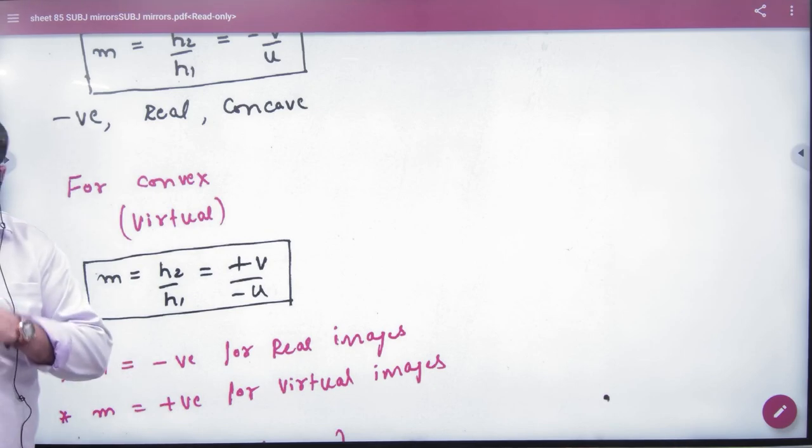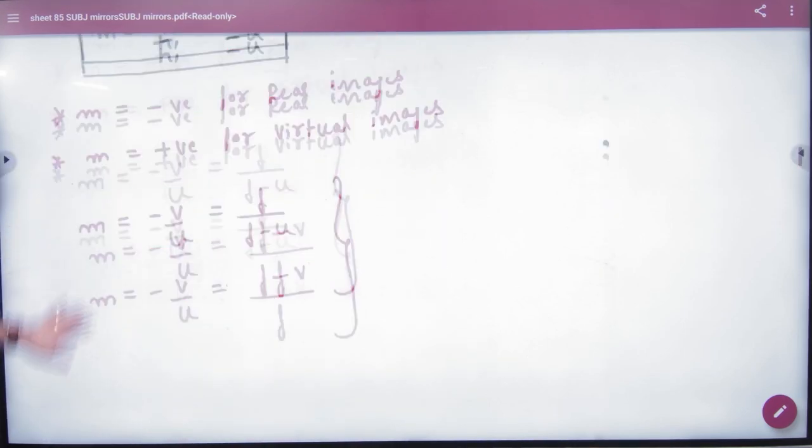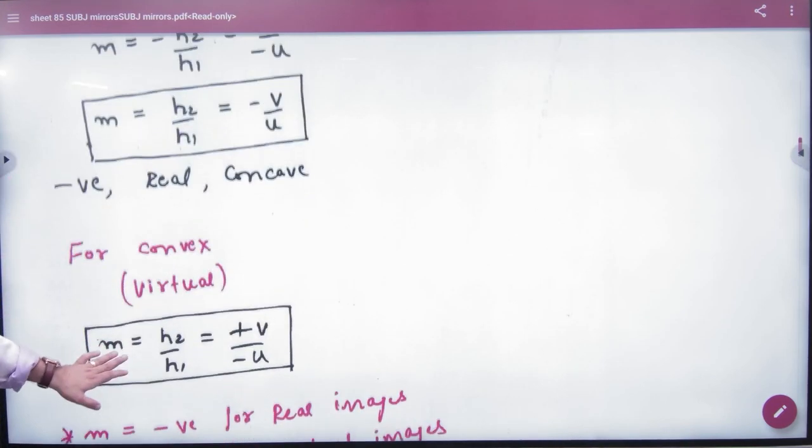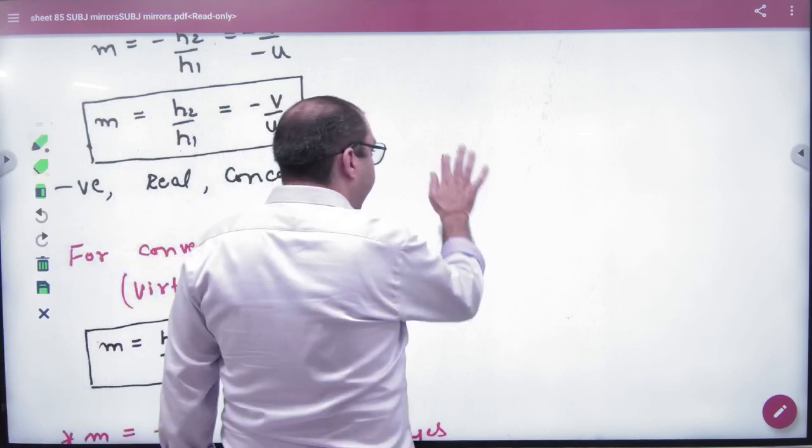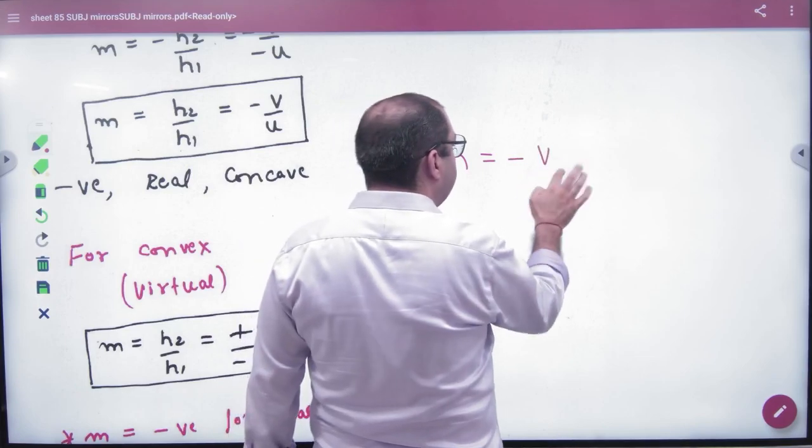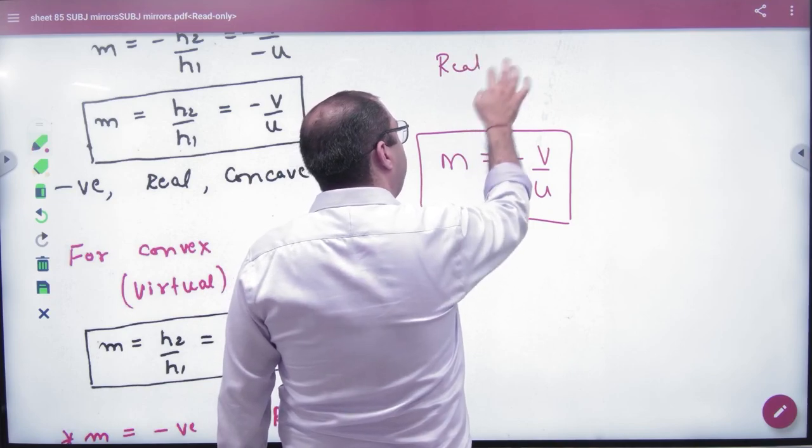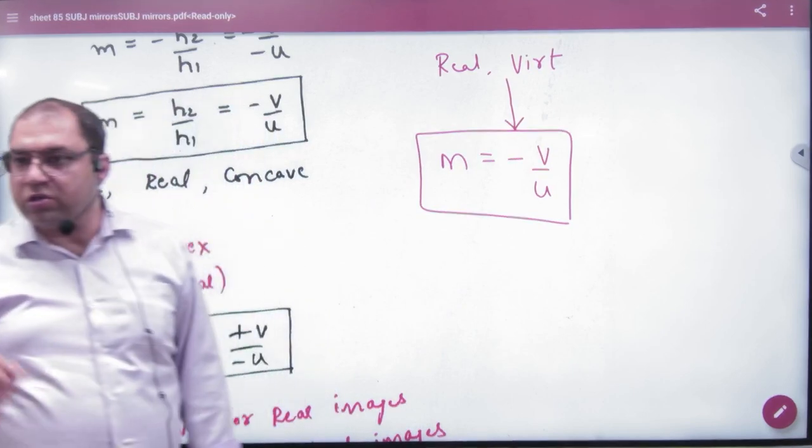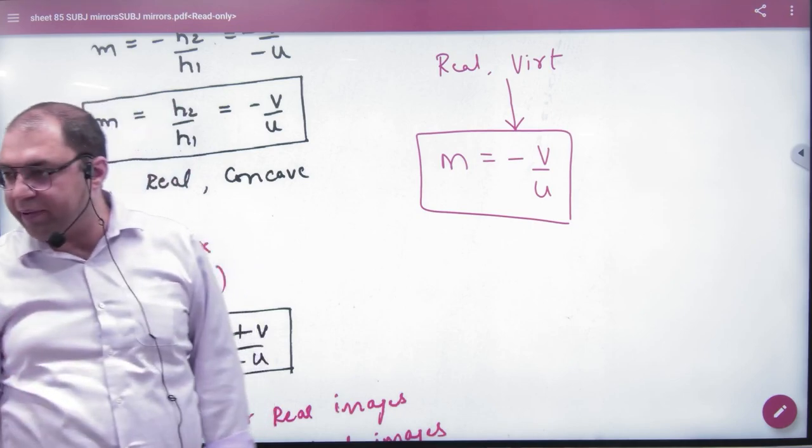I will tell you how to use it. Now, note this: whether you have real case or virtual case, magnification standard formula - use this: m equals minus V by U. Put this in the bracket. Whether it is real case or virtual case, magnification is standard formula. So when a numerical comes, the sign convention we or you, according to case, will come to our answer. First, note this formula.